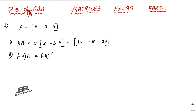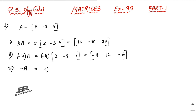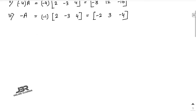Number 2: -4A means multiply -4 with each and every element of this matrix. So it's -8, then -4 into -3 is +12, and last one -16. That is your answer. Number 3: -A means multiply -1 with the matrix A, so it will be -2, +3, -4.